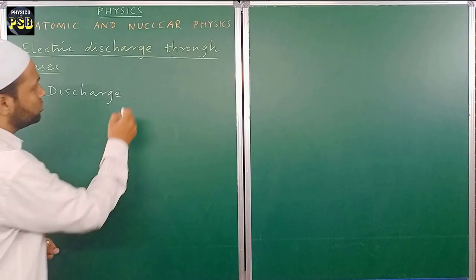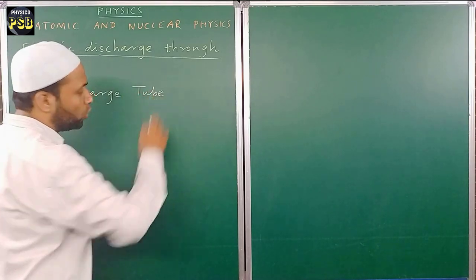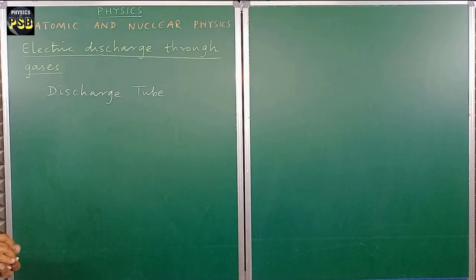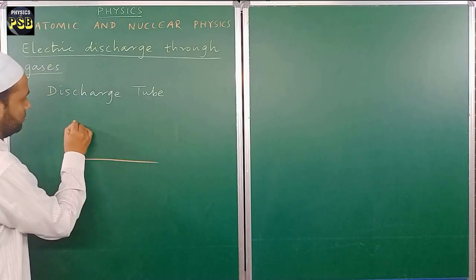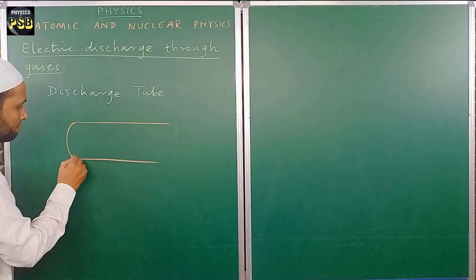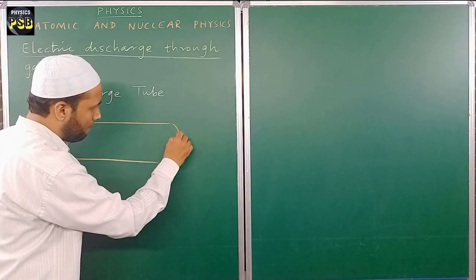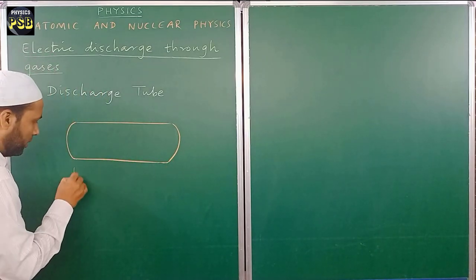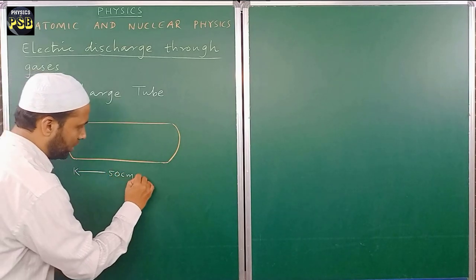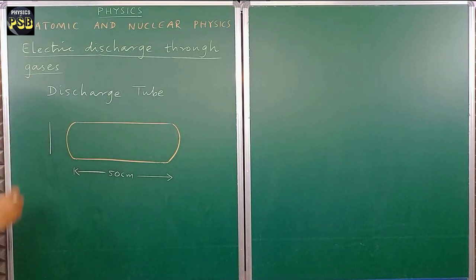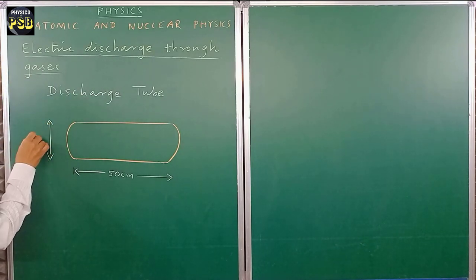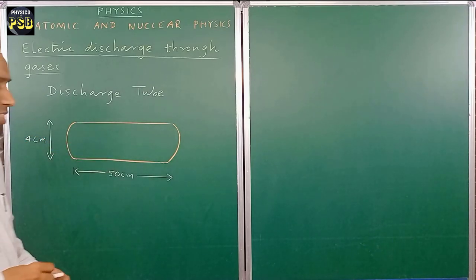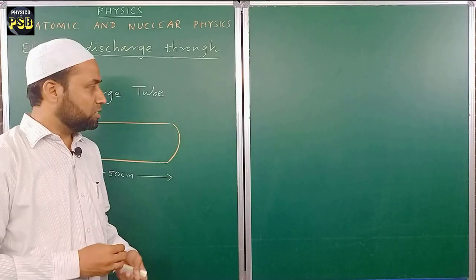A discharge tube is a device used to study the conduction of current through gases. It is made of glass and is usually half a meter in length and four centimeters in diameter. The length is 50 centimeters and the diameter is 4 centimeters, and it is filled with some gas.